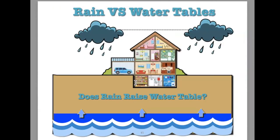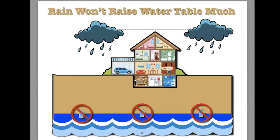Does rain raise the water table? And if so, how much? It doesn't raise it very much at all. If we have heavy rain over the course of a year, it may raise the aquifer about a foot. The water table is raised gradually, very slowly. I've had many people tell me, 'When it rains, the water table comes up really fast and then goes down really fast.' That's not what they're experiencing — somebody told them that. Ultimately, I'll find some other problem causing the water to get in the basement.